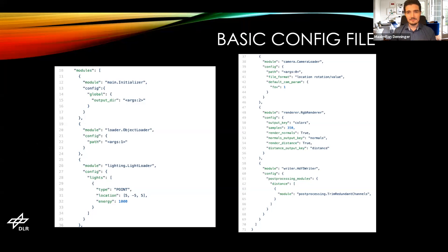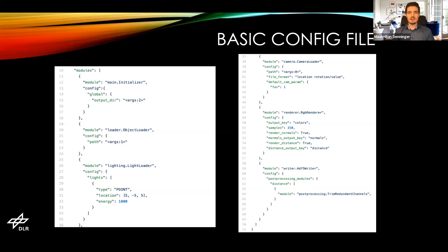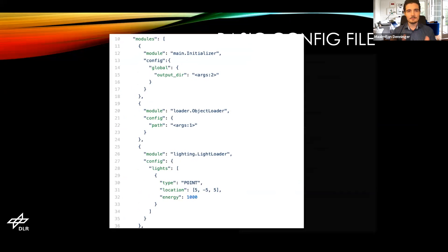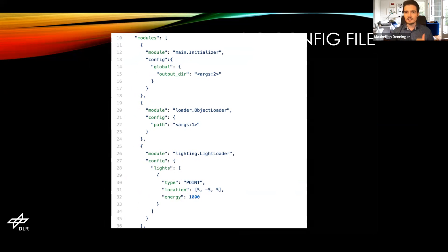Now I'll cover our basic example. This is the basic config file — all you need. We currently have 34 different examples with detailed descriptions of how to do certain things. The basic example goes over the basics and how everything works. The pipeline starts with the main initializer — that one initializes the scene, deletes any objects which might be there (if you start Blender, it starts with a default cube which gets deleted), and sets up the stage for everything which comes after.